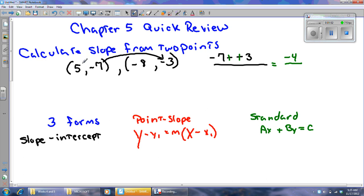Okay, now I have to do 5 minus negative 8 in my denominator, and so that'll be 5 minus negative 8 in my denominator, and I'm going to get 13, and I check to see if my slope can be reduced, but this one cannot.